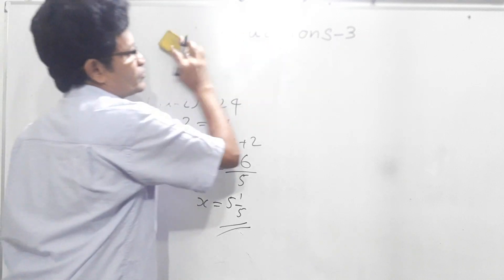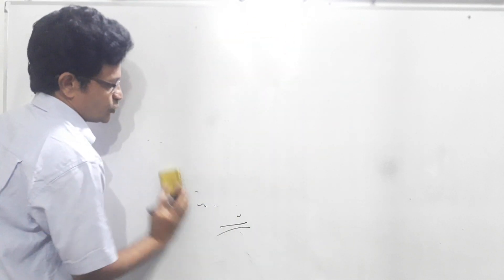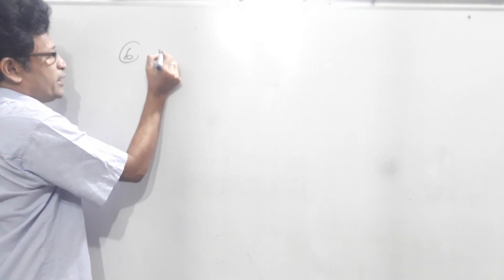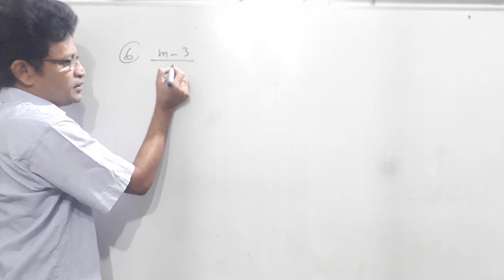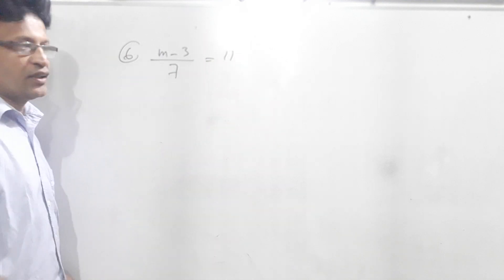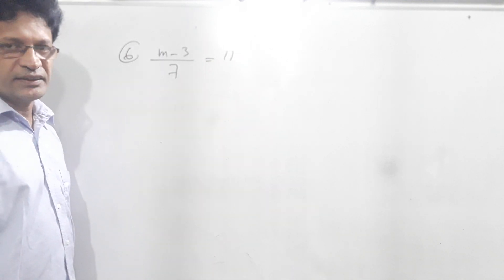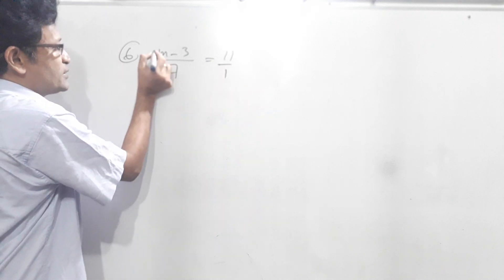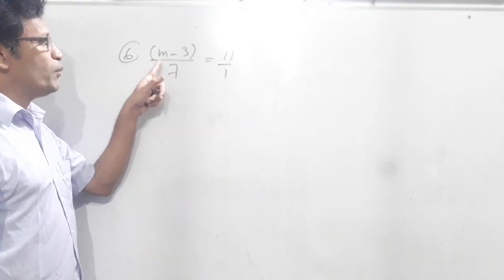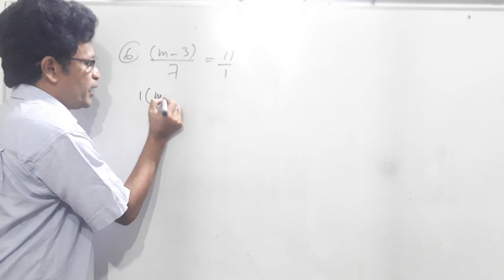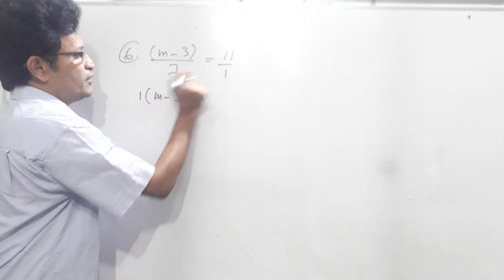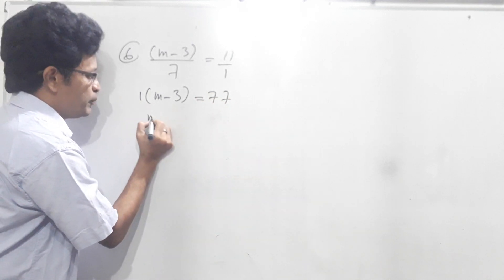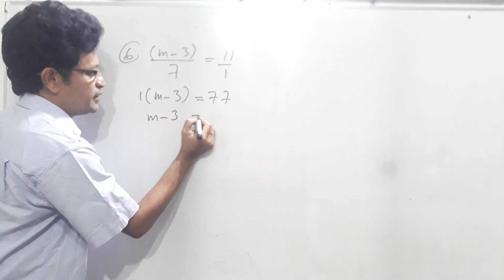Now we will do the 6th question. 6th question: m minus 3 over 7 equals 11. Now how we are going to do this one? We have to do the cross multiplication. 11 means 11 over 1. Then (m minus 3) we can bracket. 1 and (m minus 3) you have to multiply. 1 times (m minus 3) equals 7 times 11, which is 77. Now remove the bracket: 1 into m, 1 into minus 3 is minus 3, equals 77.